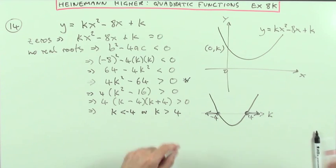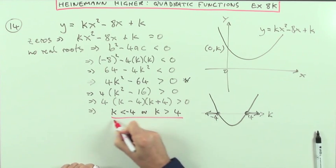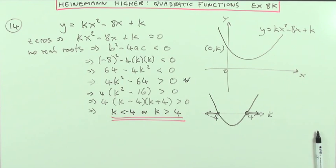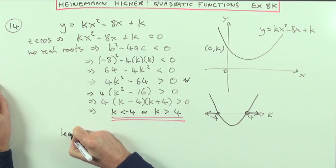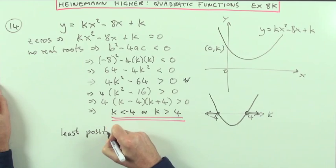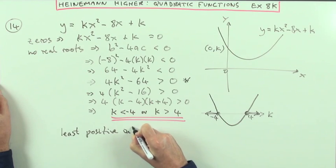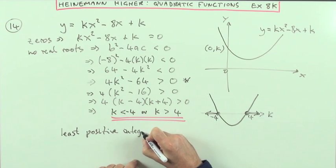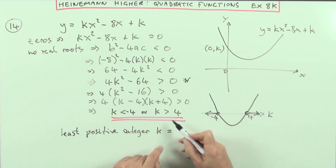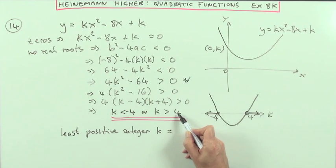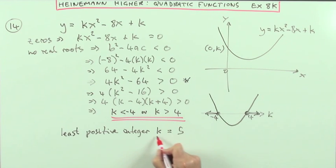That would be the solution to that inequality. But there was a further specification in this question. It said, what's the least positive value or integer value of k? What's the least positive integer? Least positive integer k would be, well, what's the first integer after 4? Because certainly I'm not going to have any negatives. What's the first integer after 4? That would be 5 then. So the answer to the question is k equals 5.